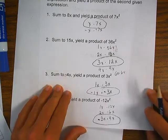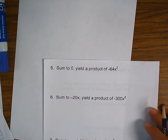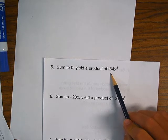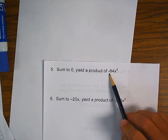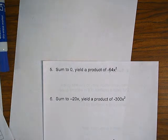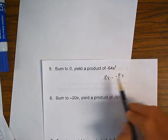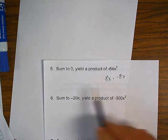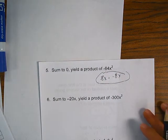All right. Good so far. Now, on 5, we notice the product is negative 64x². The product's negative. So, one positive, one negative. The sum is zero. One positive and one negative. If you're adding a positive and a negative and it equals zero, that tells me those two numbers have to be the same. But one's positive and one's negative. Eight and eight. Very good. So, a positive 8x times a negative 8x. Those multiply together to be negative 64x² and add together to be zero.